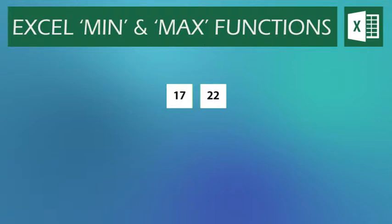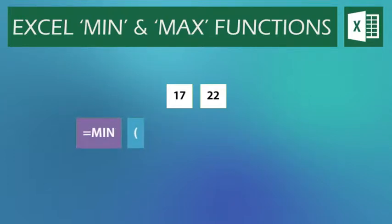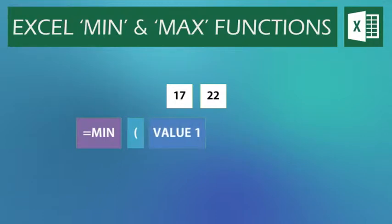In this example, I want to know which number, 17 or 22, is the smallest. To start, I would type equals MIN, then open brackets. The first thing the formula wants is the first value, in this case 17. Then we type a comma. The comma tells Excel to move on to the next part of the formula. This works for all formulas within Microsoft Excel.